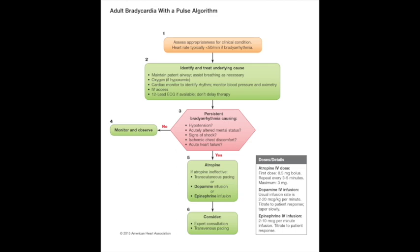Bradycardia algorithm: check pulse, then determine if stable or unstable. Unstable signs: hypotension, altered mental status, refractory chest pain, acute heart failure. If stable, monitor and observe — no acute treatment needed. If unstable/symptomatic, give atropine first line (inhibits vagus nerve). If atropine is not effective, use epinephrine, dopamine, or transcutaneous pacing. Mnemonic AEDT: Atropine, Epinephrine, Dopamine, Transcutaneous pacing. Transcutaneous pacing is also first line for third-degree heart block.